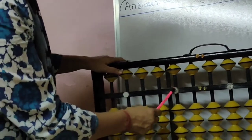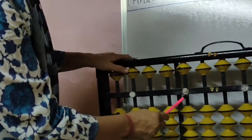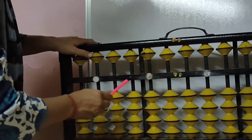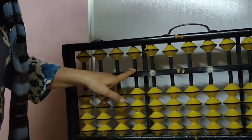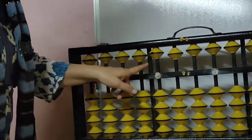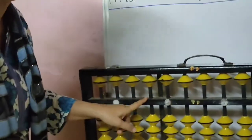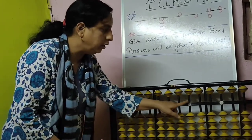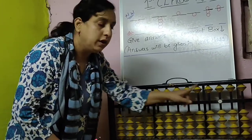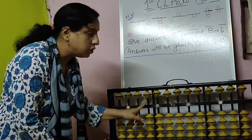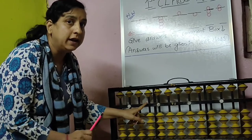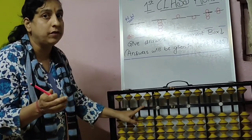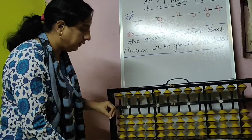So, unit number — unit wala ye hai, dot. This ke baju ko tens rod, beside this tens rod also there. This is unit rod. Unit rod ke baju — tens rod, beside unit rod, tens rod will be there. So how to do ten — that I will show you.